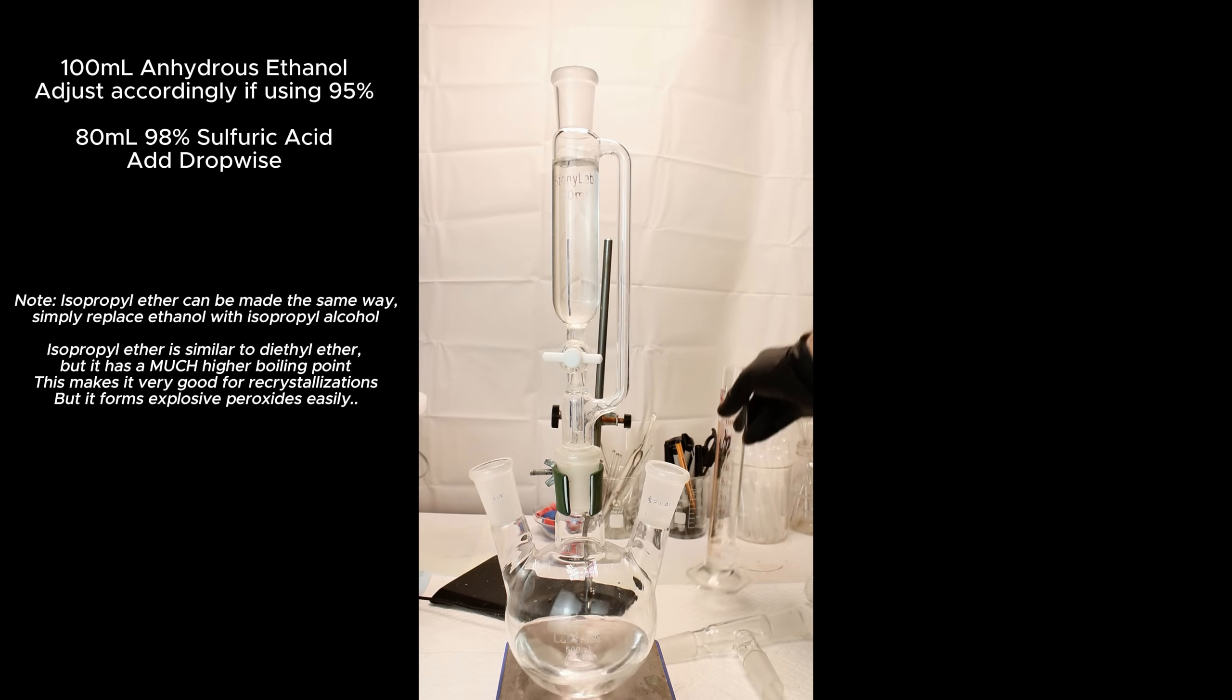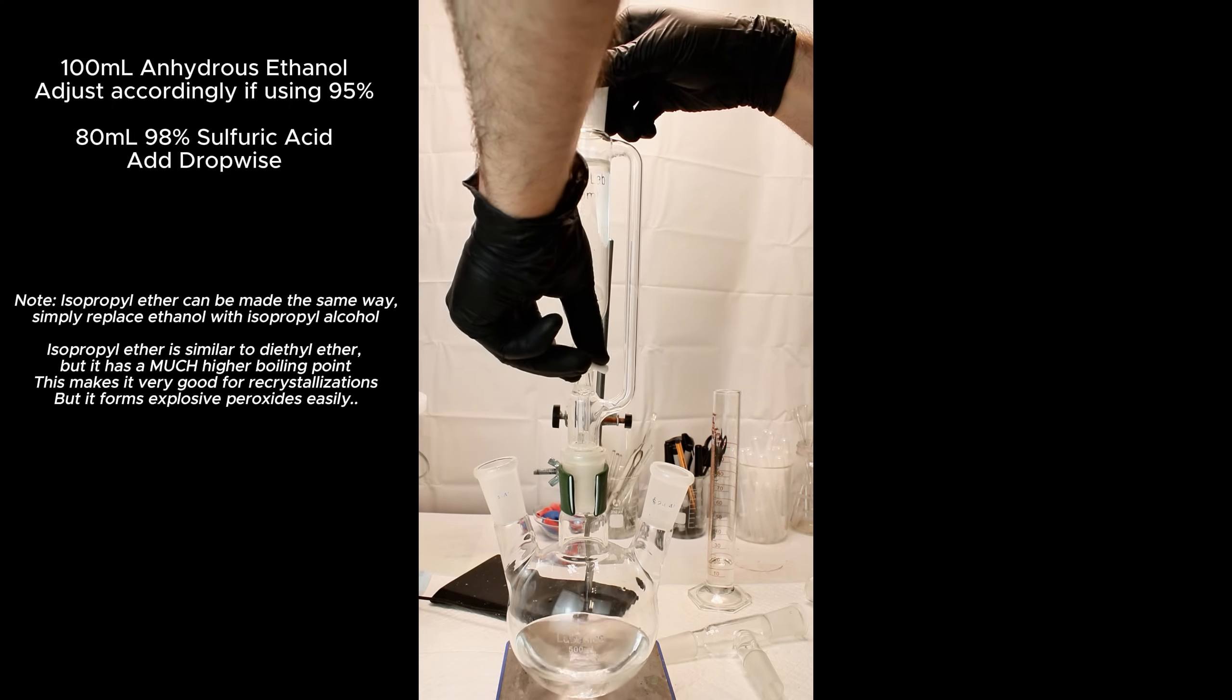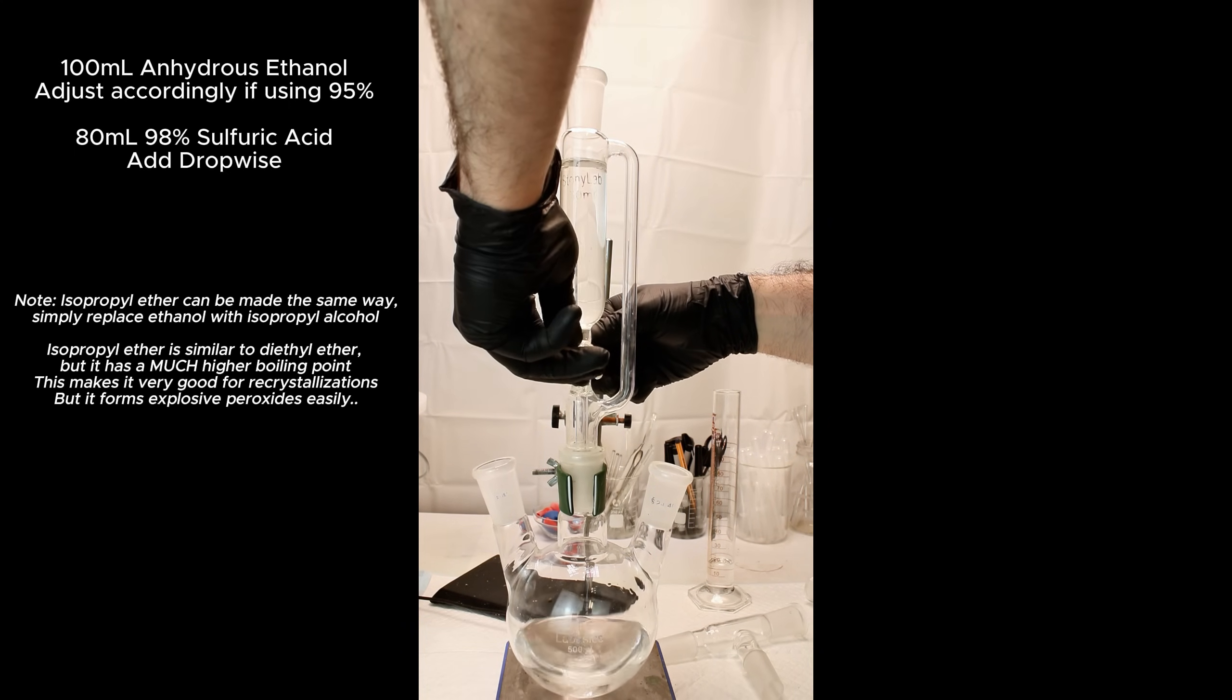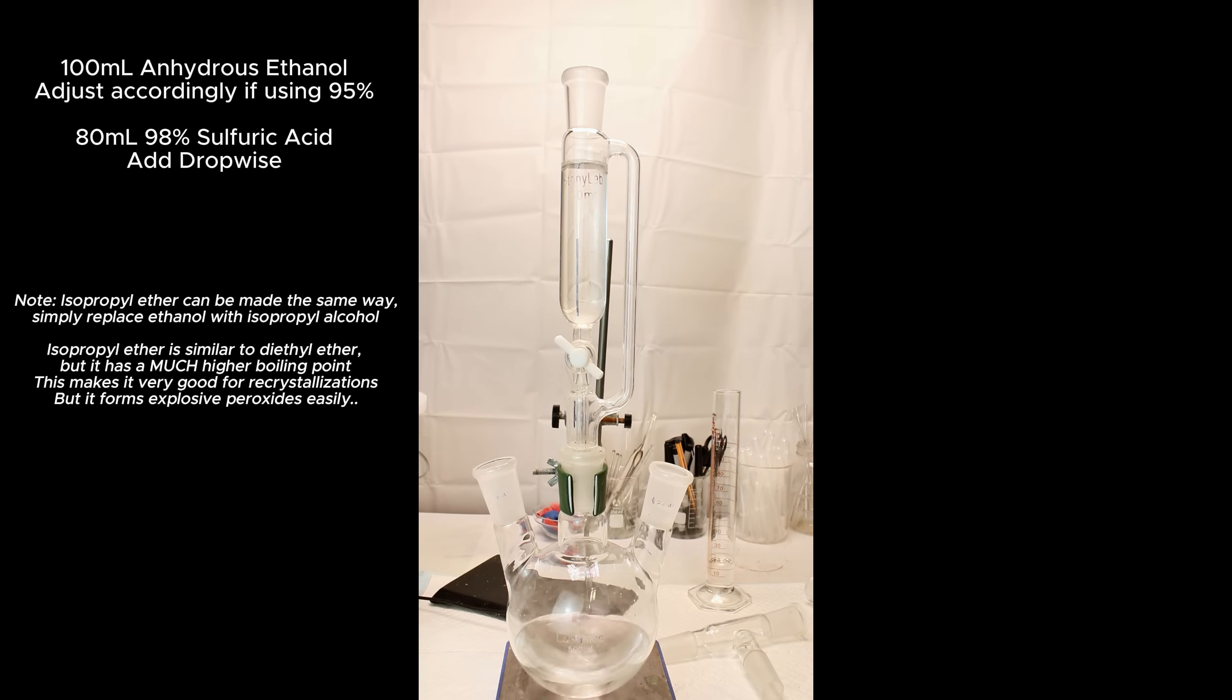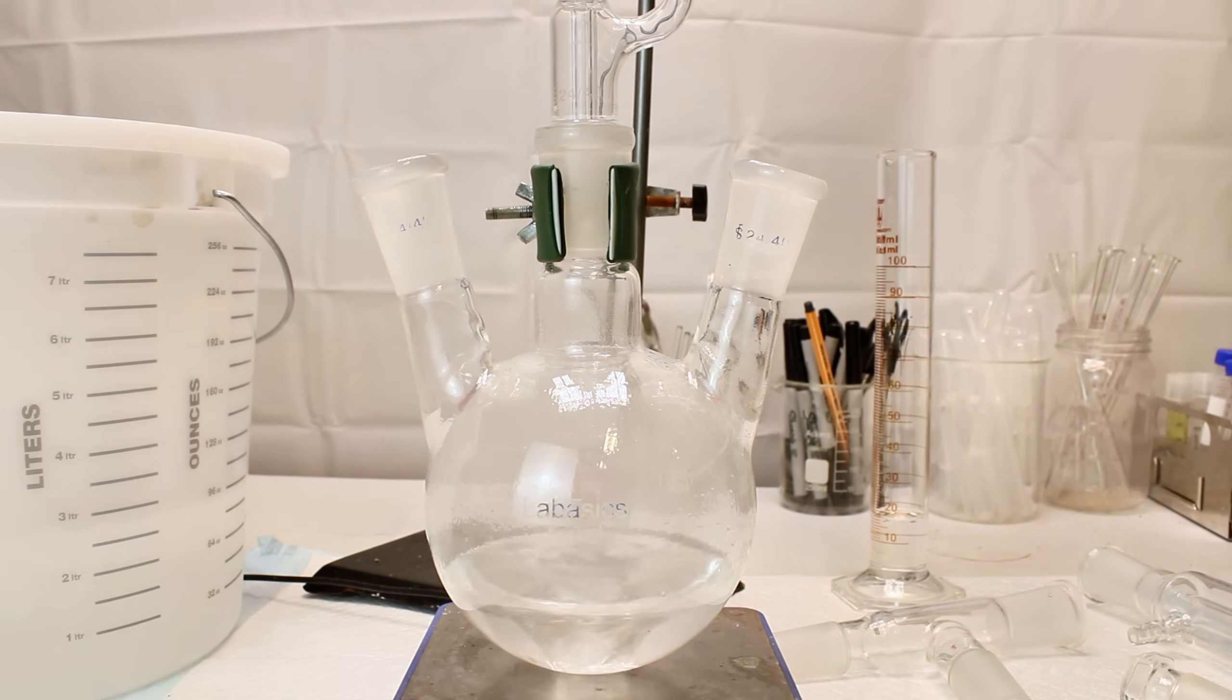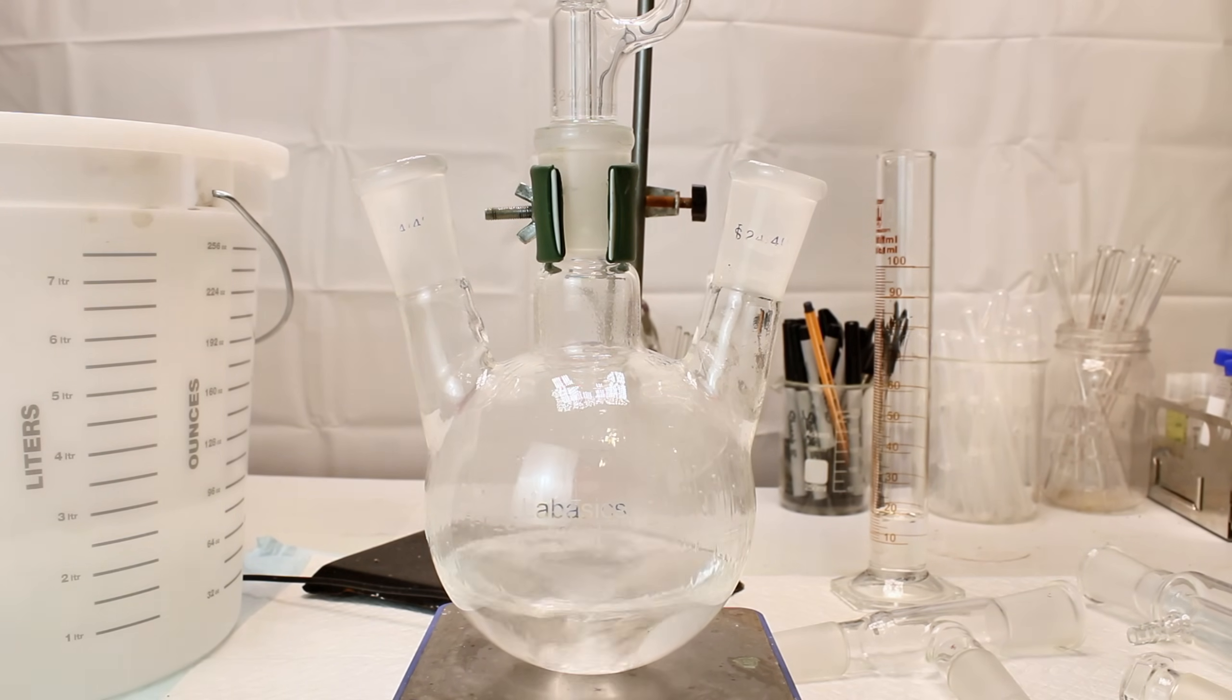I then add 80ml of concentrated 98% sulfuric acid to an addition funnel and connect it to the center neck of the boiling flask so that I can slowly add it to the ethanol dropwise. This is done because sulfuric acid generates a lot of heat when it's mixed with ethanol, and trying to add this much acid too quickly would cause it to violently boil, which could result in a loss of product or even injury.